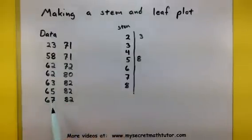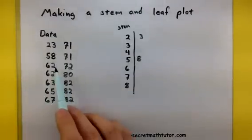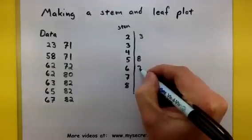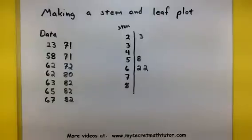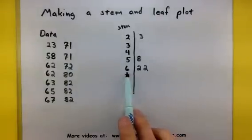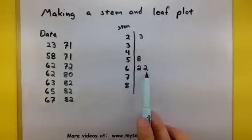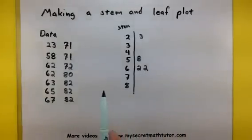And now we get into these 60's, and we've got lots of 60's. In fact, I have two 62's, so I'm going to put a 2, and then I'm going to put another 2. So the way I read this is, here's one 62, and here's another 62. Let's keep going.